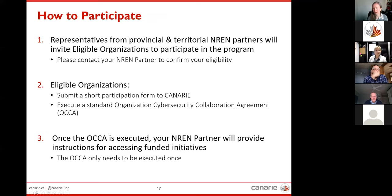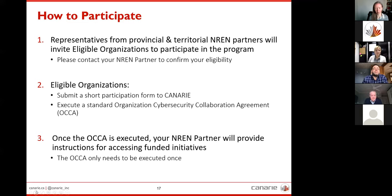Representatives from your provincial and territorial NREN partners will be inviting eligible organizations to participate in the CIP. If you haven't heard from them and you're not sure about your eligibility, please reach out to your NREN partner. The eligible organizations will get a link from their NREN partner to submit a short participation form that comes right through to Canary. My team puts together the agreement — called the Organization's Cyber Security Collaboration Agreement, or OCCA — and we send it to you for execution. Once that's executed, your NREN partner will provide instructions for the initiatives open at that time. The good news is you only have to do one OCCA — it's your ticket to be involved in the CIP program as a whole.